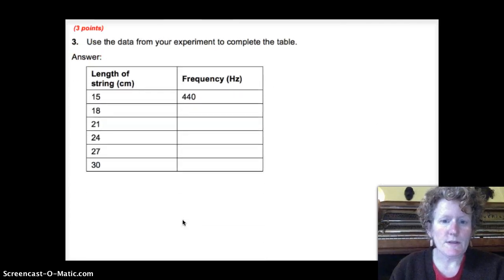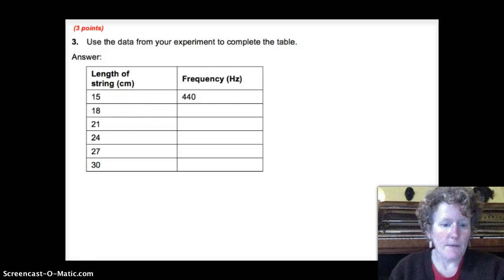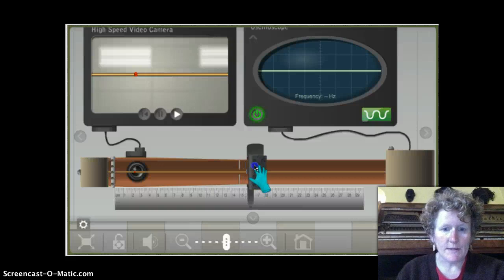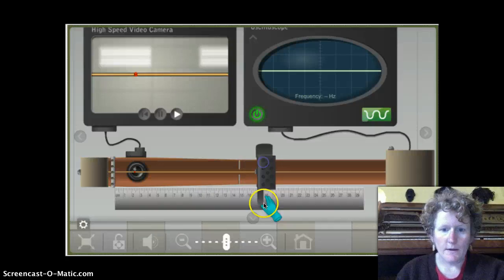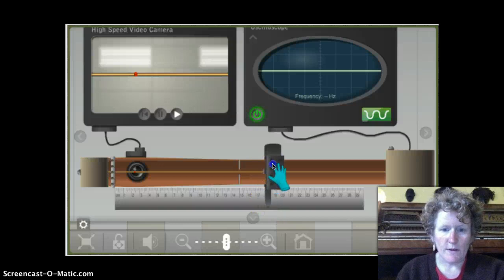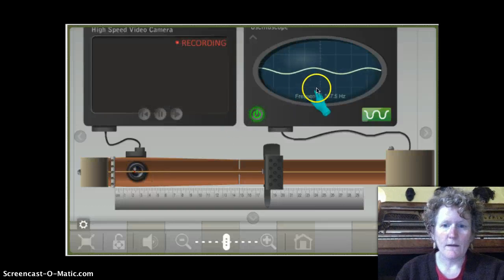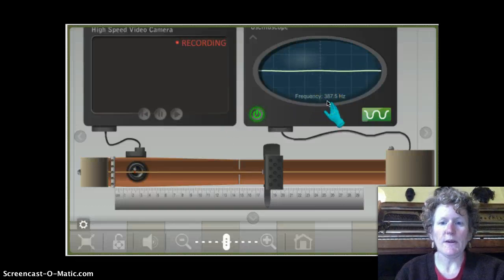So let's use the data from your experiment to complete the table. I already did the first one for you. The length of the string was 15 centimeters, as measured on the ruler. And I recorded the frequency. Let's do 18 together. Here we are in the virtual lab. And I can move the clamp to 18 centimeters right here. There, you can see it right there. So move the clamp right to 18. Pluck the string. Have to hit exactly on that red dot. And then note the hertz, 387.5.